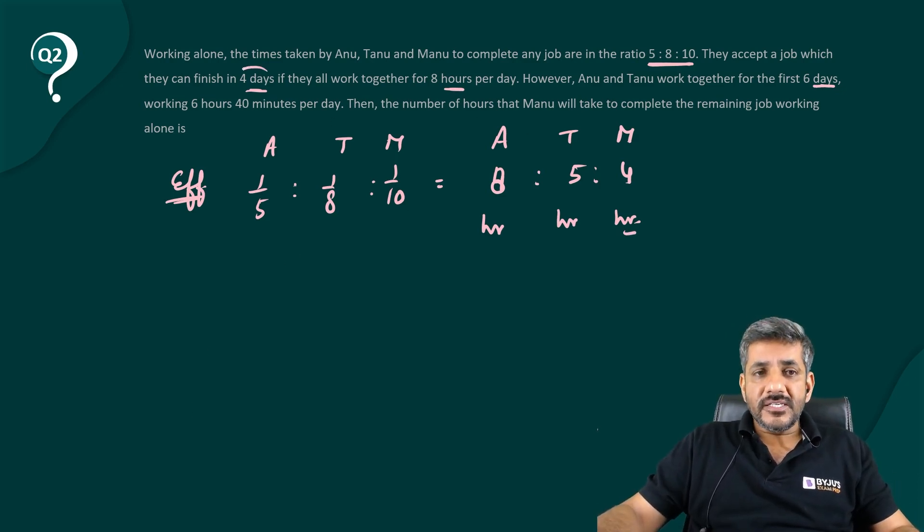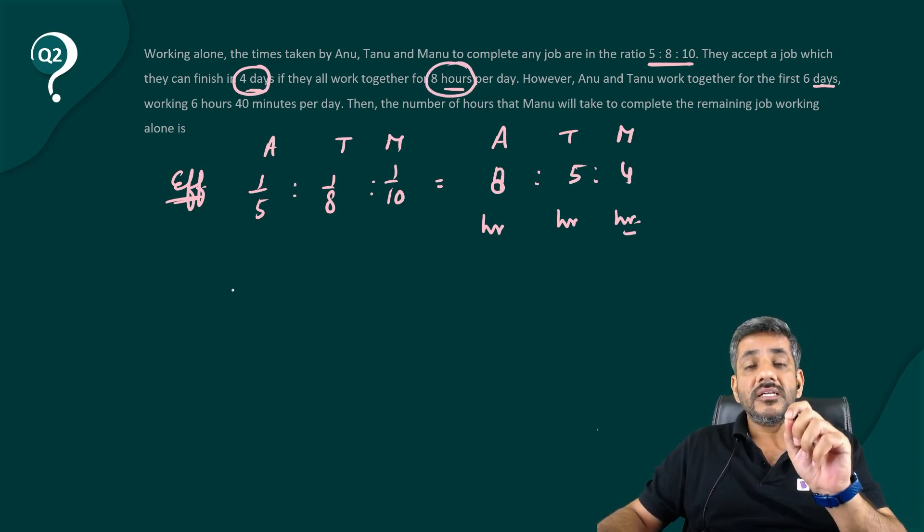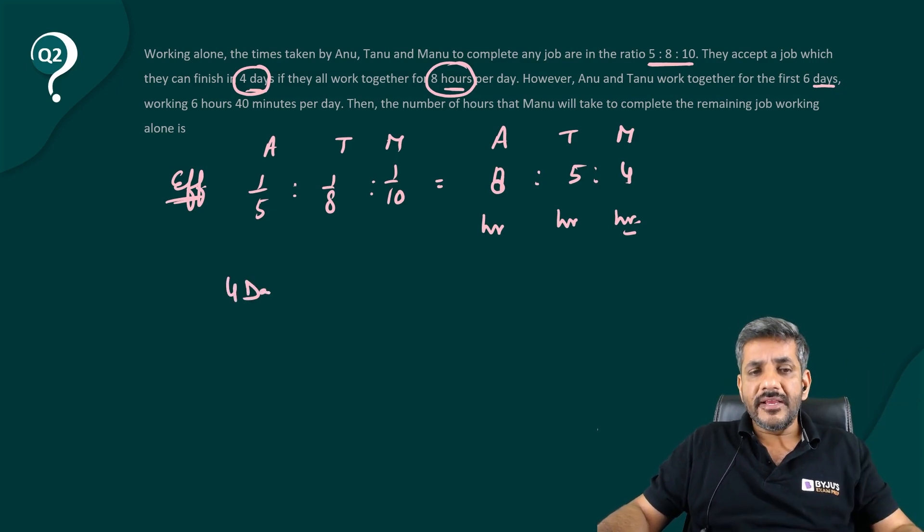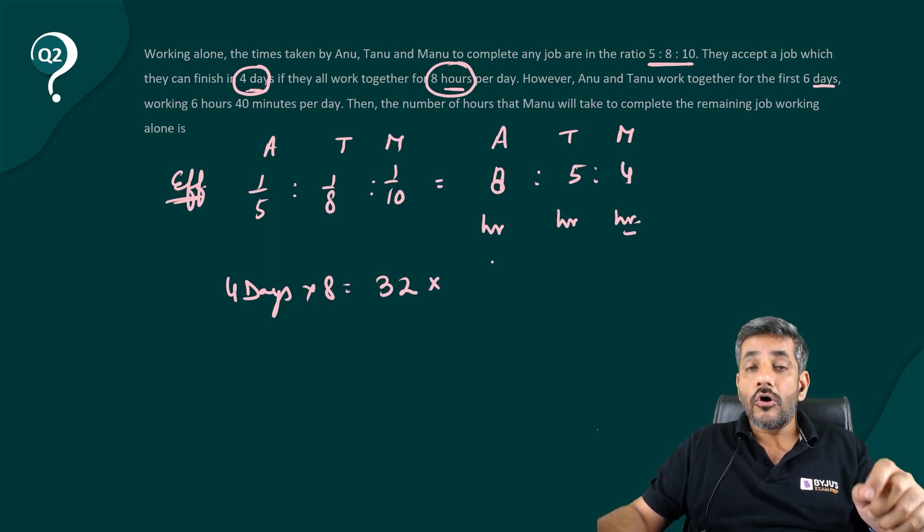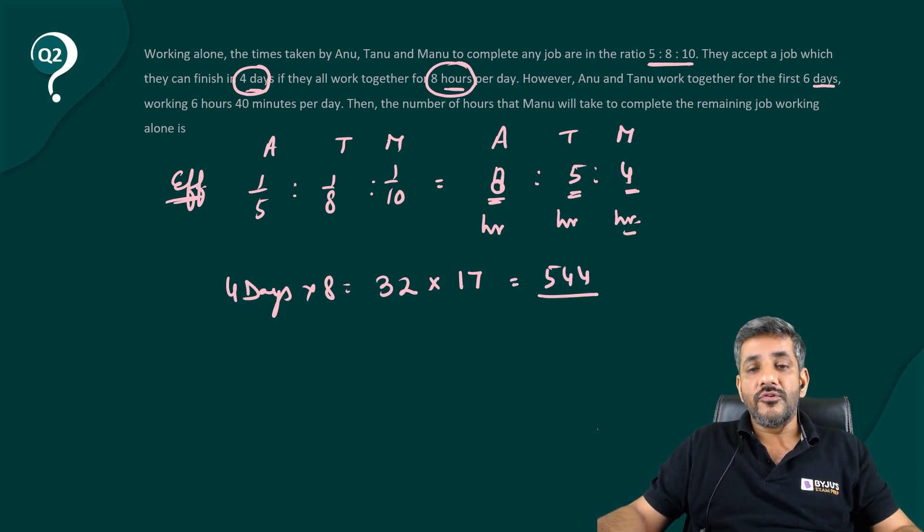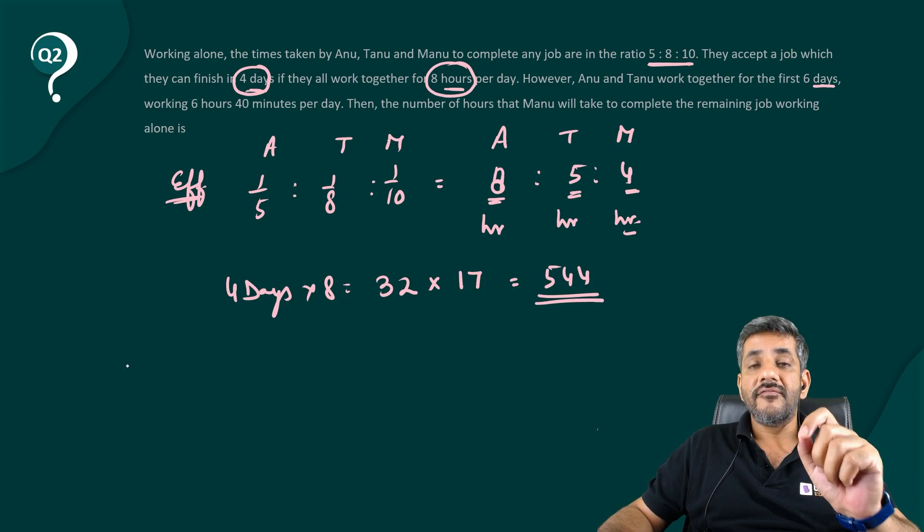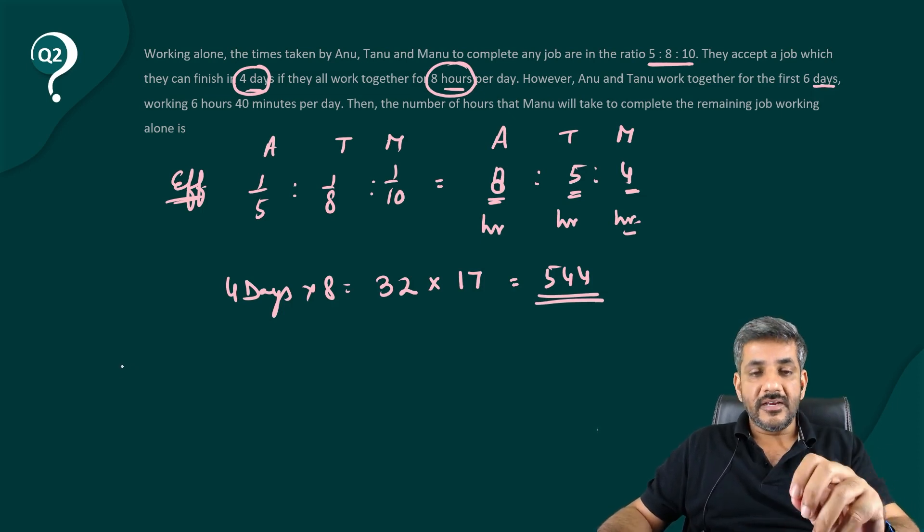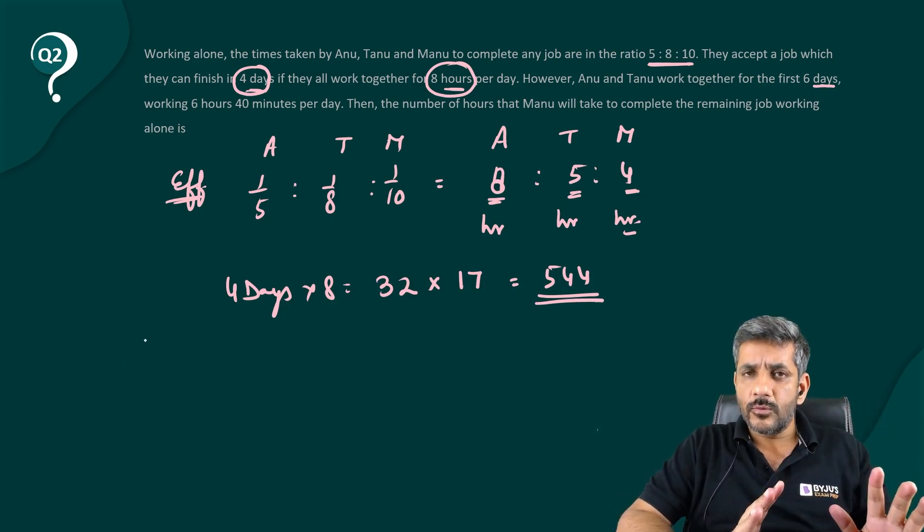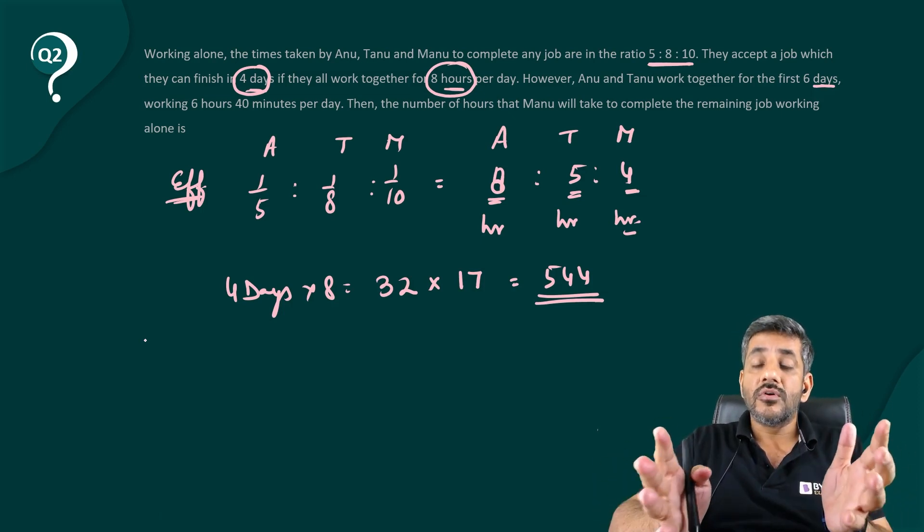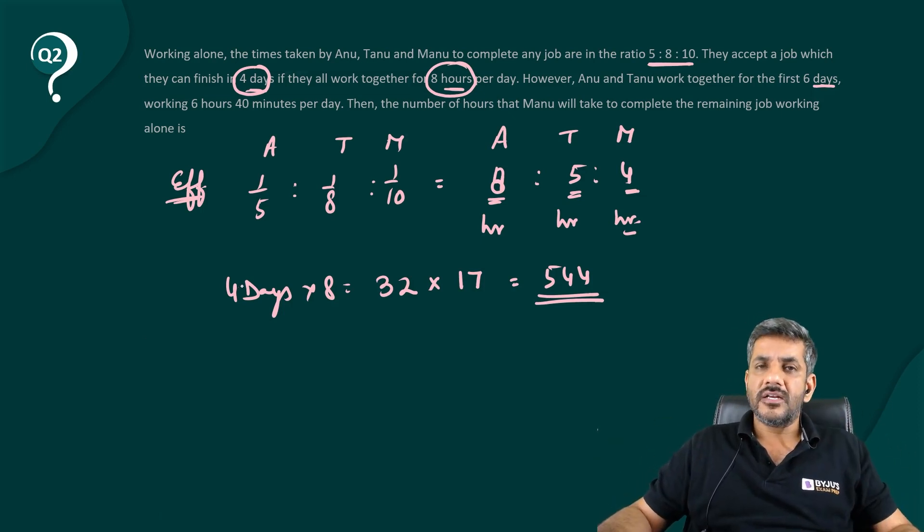He says, they can finish the job in 4 days working 8 hours per day. That means, they are working 32 hours. In 4 days, when you work 8 hours per day, you are doing the job in 32 hours and all 3 of them working together are doing it in 32 hours. All 3 means 8 plus 5 plus 4, that is equal to 17 units. So I can say the total number of units which are to be made are 544. 17 into 32. 32 is the total number of hours that they work. 17 is the total number of units they are working together. So therefore, 544 is the total work.